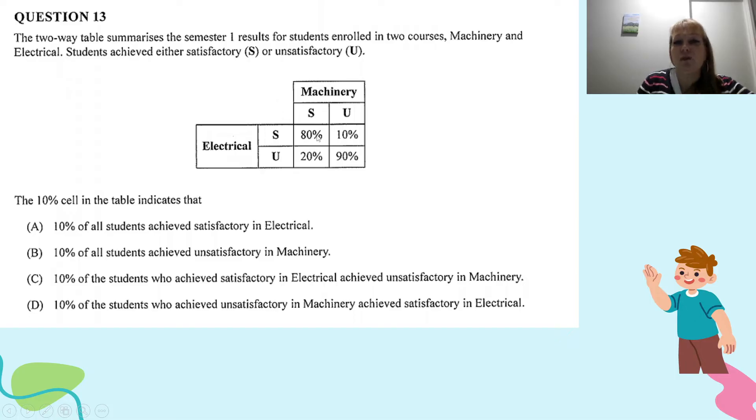You'll notice if we read across the rows 80% plus 10% makes 90% as a total, 20 plus 90 makes 110% as a total. So that's telling us straight away we can't read across the rows, we need to read down the columns.